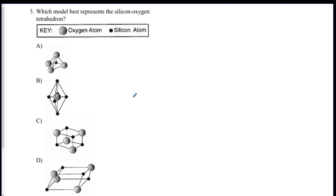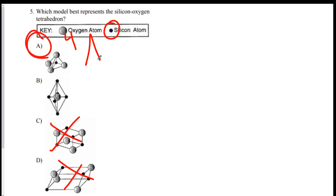Number five: which model best represents a silicon-oxygen tetrahedron? Remember, it has to be a pyramid shape, so C and D are out. It has to have one silicon atom in the middle and four oxygens around the outside, so A is the right answer. B has the atoms flipped, and there are way too many atoms in that picture anyway — it's not even a pyramid.